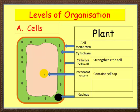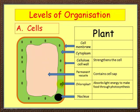Inside the middle of the plant cell you've got a permanent vacuole. A permanent vacuole contains cell sap, which gives strength and rigidity to the cell — the more sap, the more rigid and supported it is. And lastly you've got green structures called chloroplasts, which absorb light energy to make food through photosynthesis. They contain a special green pigment called chlorophyll, which has the ability to absorb light energy.